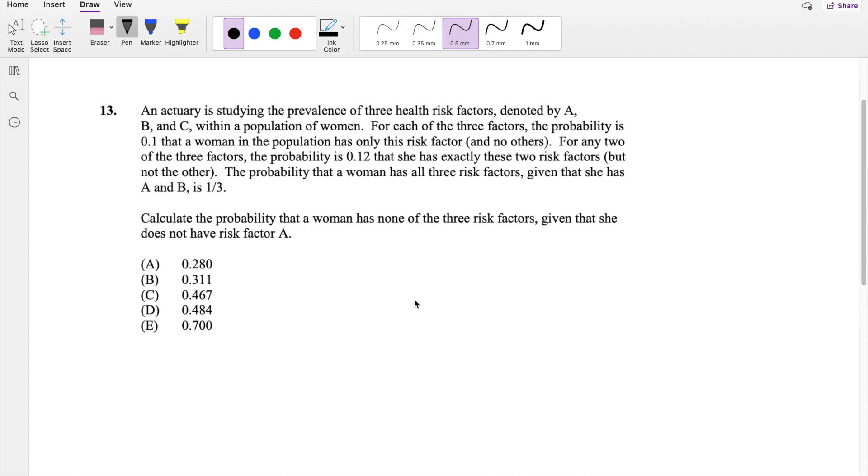An actuary is studying the prevalence of three health risk factors denoted by A, B, and C within a population of women. For each of the three factors, the probability is 0.1 that a woman in the population has only this risk factor. So just this part inside will be 0.1, and likewise it's going to be the same for all three factors.